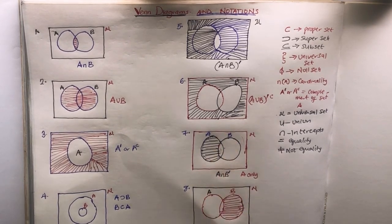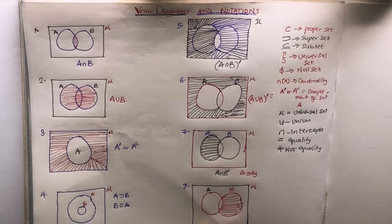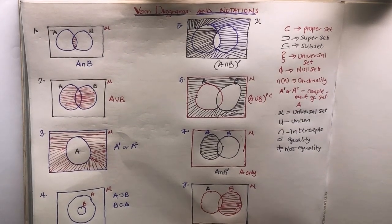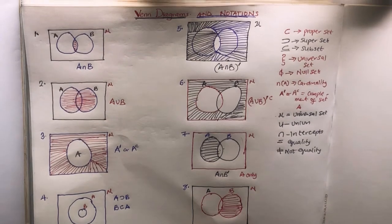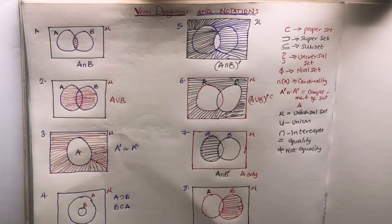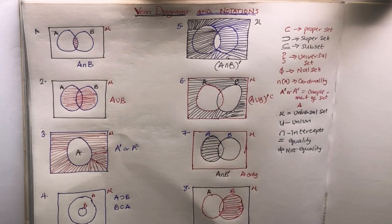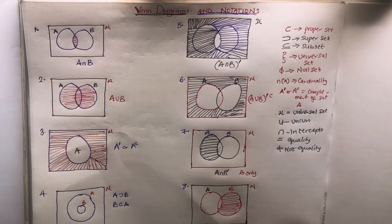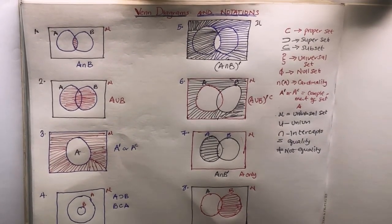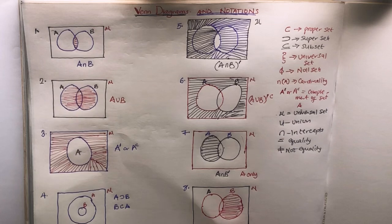The next case is similar but reversed. This time it is A complement intersection B — the reverse situation where B is shaded instead. So in this case it is A complement intersection B, but you can also call this 'B only.'